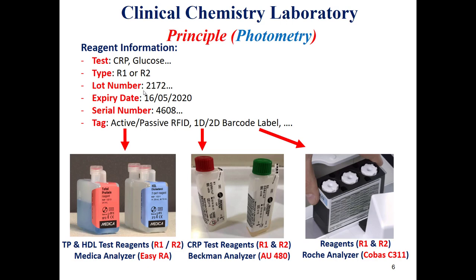The lot number is very important. This lot number will be changed every four to six months, depending on the production of this reagent by the manufacturer or supplier. We also need to know the expiry date for this reagent. There is a lifetime for this reagent, and usually to keep it within this lifetime, we should keep it at 2 to 8 degrees to avoid evaporation. In addition, we should know the serial number of this reagent.